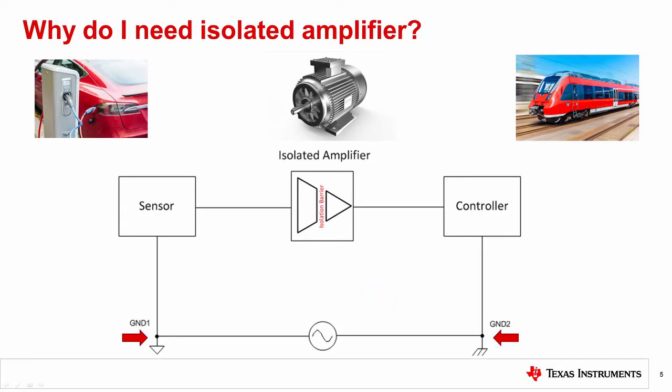A second reason for using an isolated amplifier is protection against high voltage. When industrial equipment is running at hundreds of volts, isolated amplifiers can safely withstand high voltage surges that can damage equipment or harm humans.